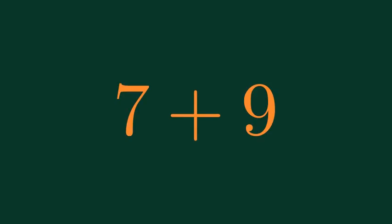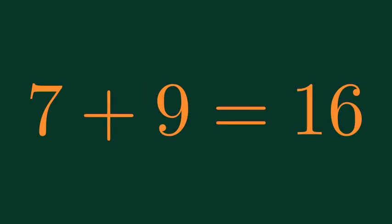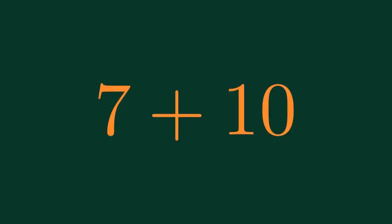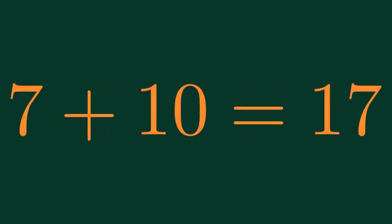What is 7 plus 9? 7 plus 9 is equal to 16. What is 7 plus 10? 7 plus 10 is equal to 17.